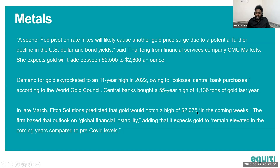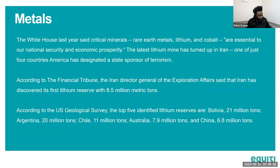The higher demand for gold is expected to drive prices up. In late March, Fitch Solutions predicted gold would notch a high of $2,075. Last year's high was $2,069, during the panic when Russia invaded Ukraine. In the coming weeks, gold prices are expected to run back up to $2,075. The firm based that outlook on global financial instability — several US banks have collapsed — and expects gold to remain elevated compared to pre-COVID levels.